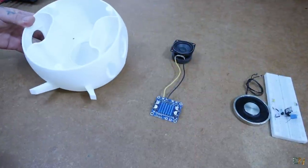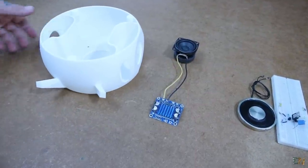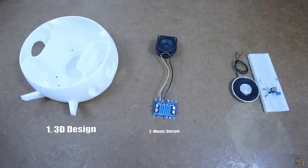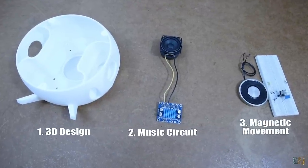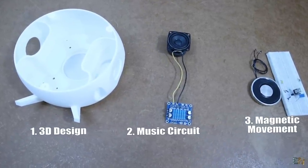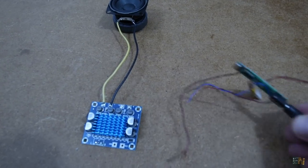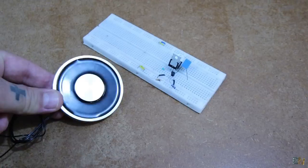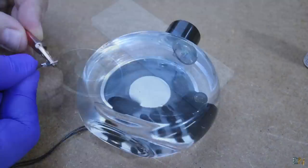What's up my friends, welcome back. For this project we have three parts: design and print the enclosure, select and make the music circuit with the amplifier, and the third part will be the magnetic control circuit of the ferrofluid. So let's start.